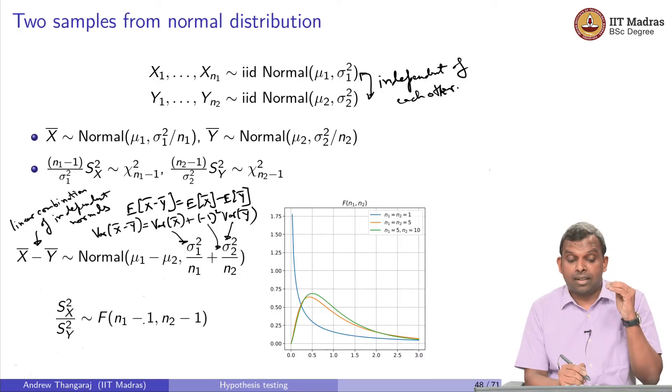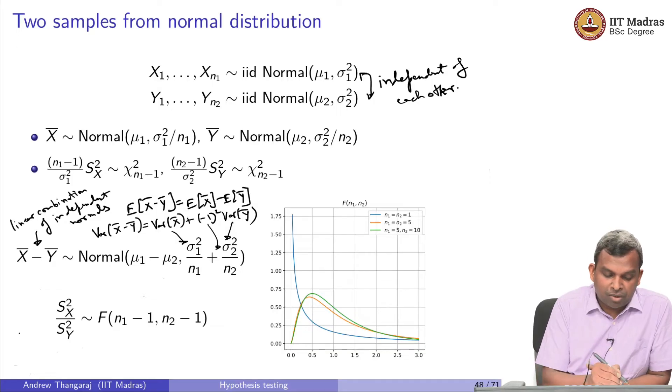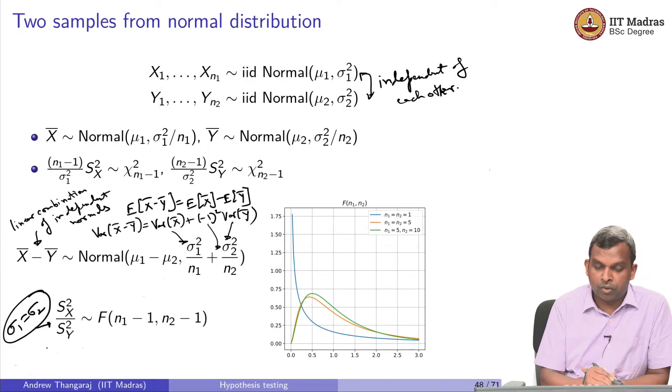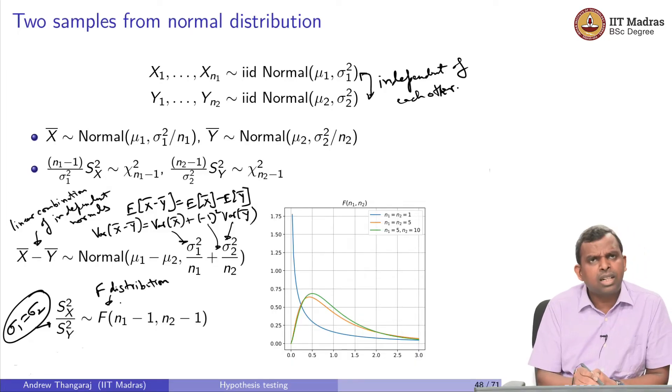That is the X̄ minus Ȳ. This is a normal distribution. We know how to deal with normal distributions, no problem. Now let us go to the sample variances. It turns out the ratio of these two sample variances, when σ1 equals σ2, this is an important criteria here. If σ1 is equal to σ2, then Sx²/Sy² takes this F distribution. This is called the F distribution. This is important.